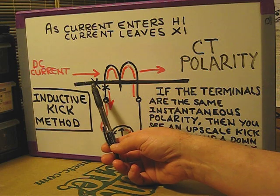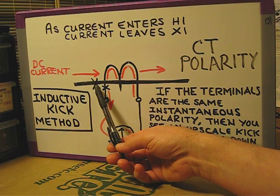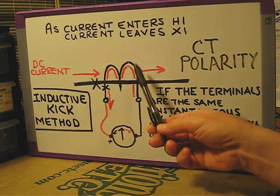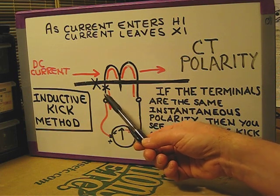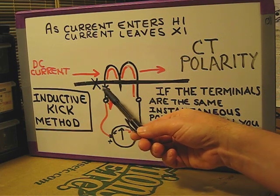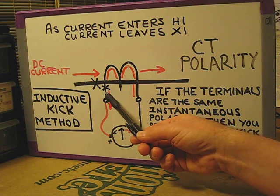We'll inject a positive DC current into the H1 side of our CT. As H1 becomes positive and the current enters H1, current will leave the X1 terminal.